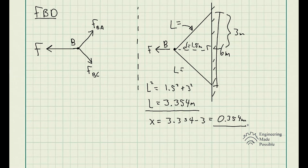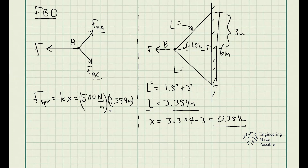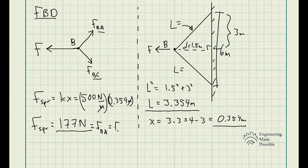So now the question is, what is the force being exerted by springs BC and BA? Going back to our spring equation, the force of a spring equals K times X. So we have 500 newtons per meter times 0.354 meters — the meters cancel out and the force in the spring is 177 newtons. This is the force in spring BA as well as spring BC: both are 177 newtons.